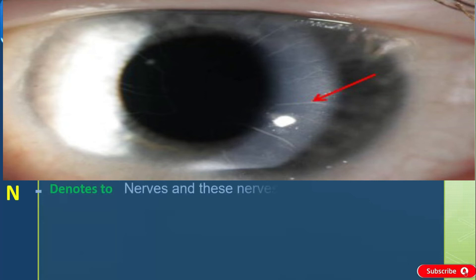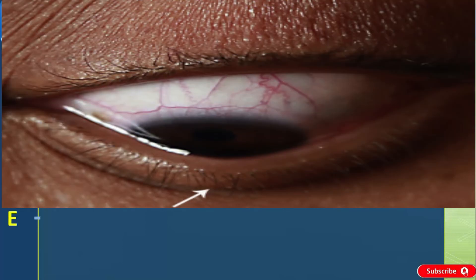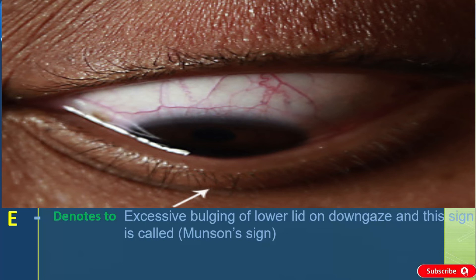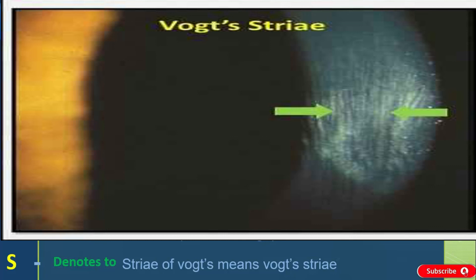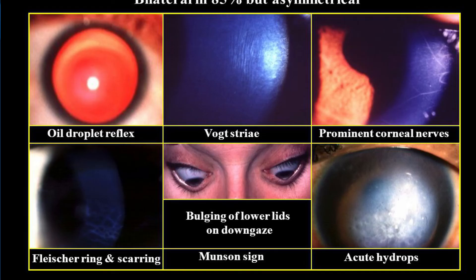N denotes to nerves, and these nerves are very prominent. E denotes to excessive bulging of the lower lid on downgaze, and this sign is called Munson's sign. S denotes to striae, also known as Vogt's striae. I hope this mnemonic would be helpful for you.